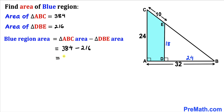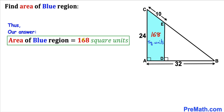384 minus 216 gives us 168 square units. So the area of this blue shaded region turns out to be 168 square units — that's our final answer. Thanks for watching, and please don't forget to subscribe to my channel for more exciting videos. Bye!